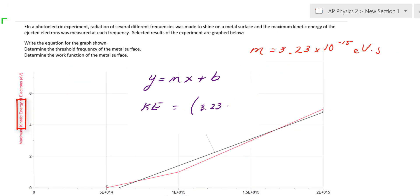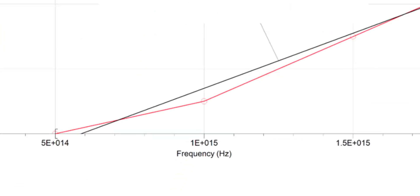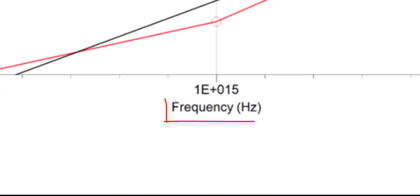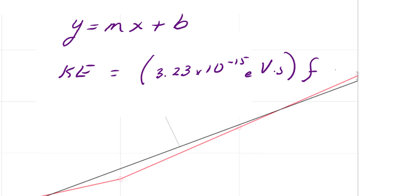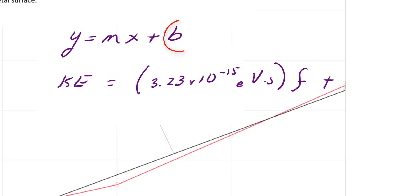m, I already have solved for, so I'm going to put in the number and the units for my slope, and then x. What is x? Well, x is what is on the x-axis. And on the x-axis, I have frequency, so I'm going to put frequency for x, and then I have b, the y-intercept, which I don't know.